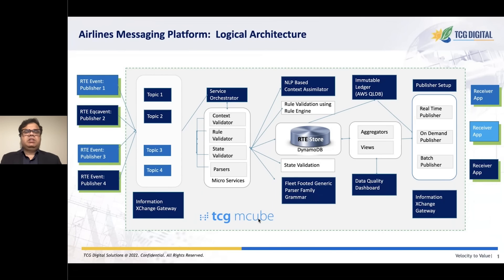Once the messages are massaged and curated, they are ready to be published to downstream systems using the information exchange gateway. Publishing messages to downstream systems can either be real-time, on-demand, or in batches.